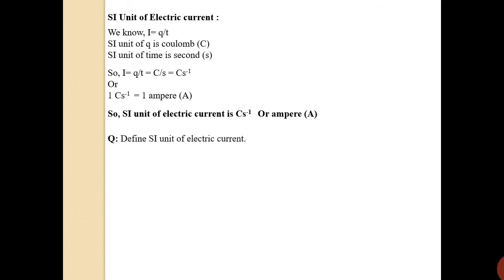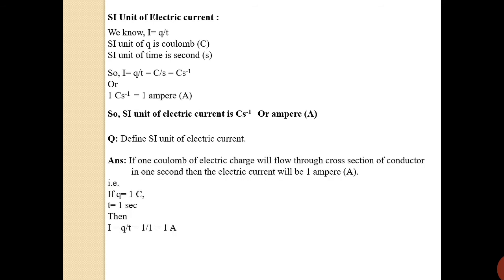We can now define the SI unit of electric current. To define any SI unit we define what 'one' of that unit means. The SI unit of electric current is ampere, so we define one ampere. Using I = Q/T, if we take charge as one coulomb and time of flow of charge as one second, dividing one by one gives one ampere. Therefore: if one coulomb of electric charge flows through the cross-section of a conductor in one second, then the electric current flowing in the conductor is one ampere.